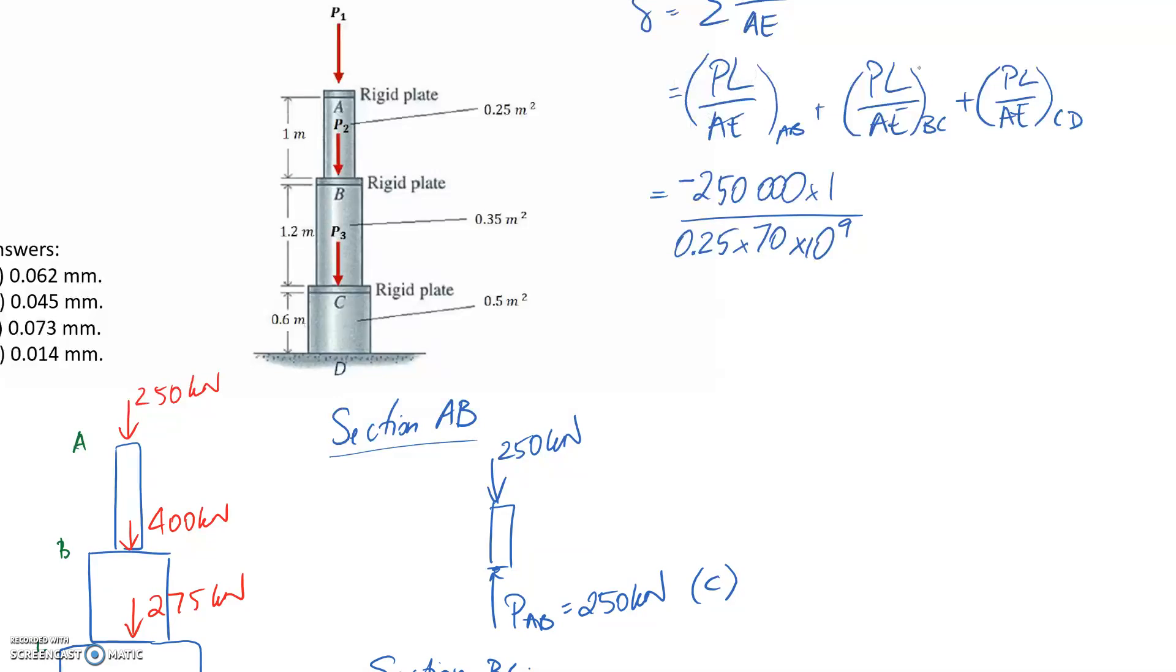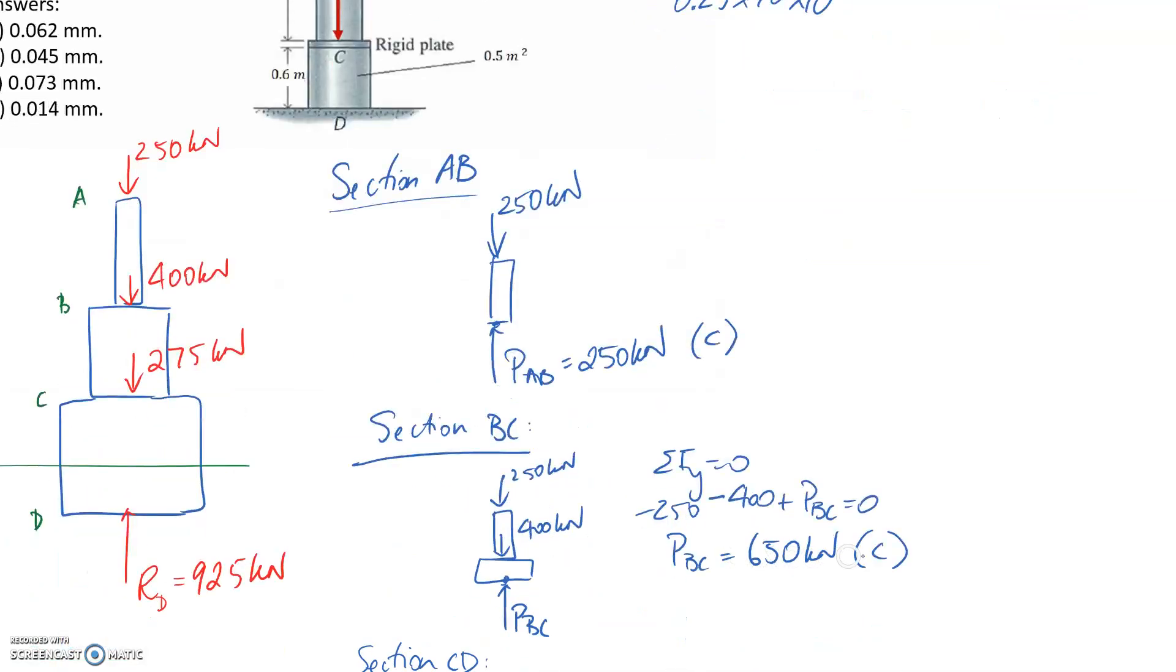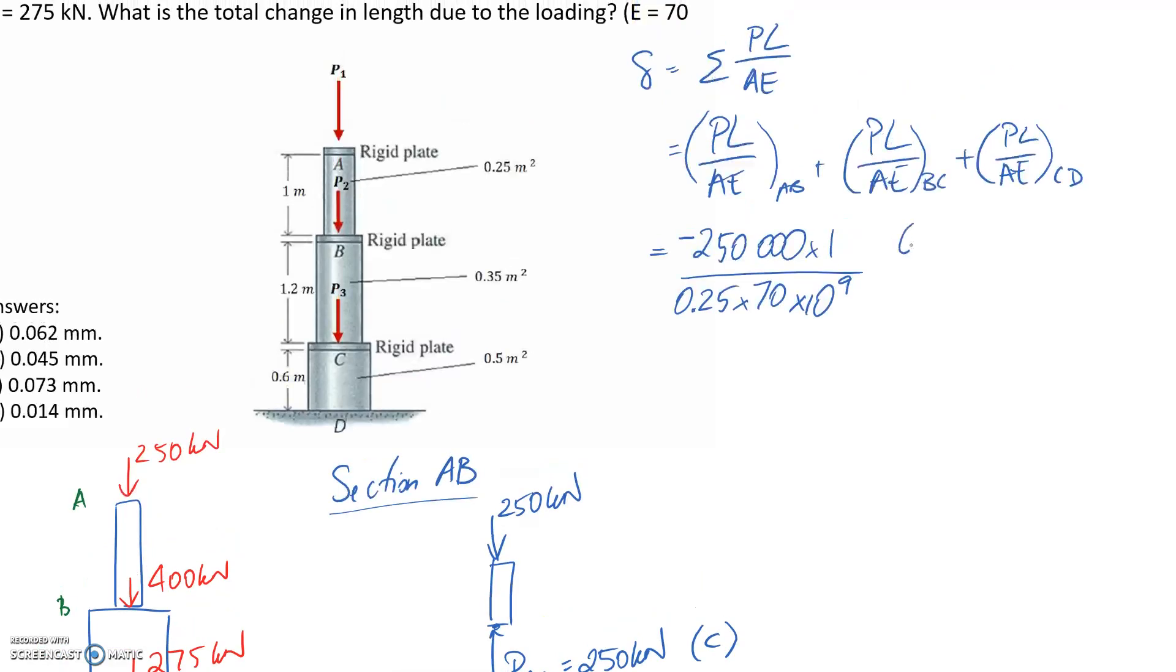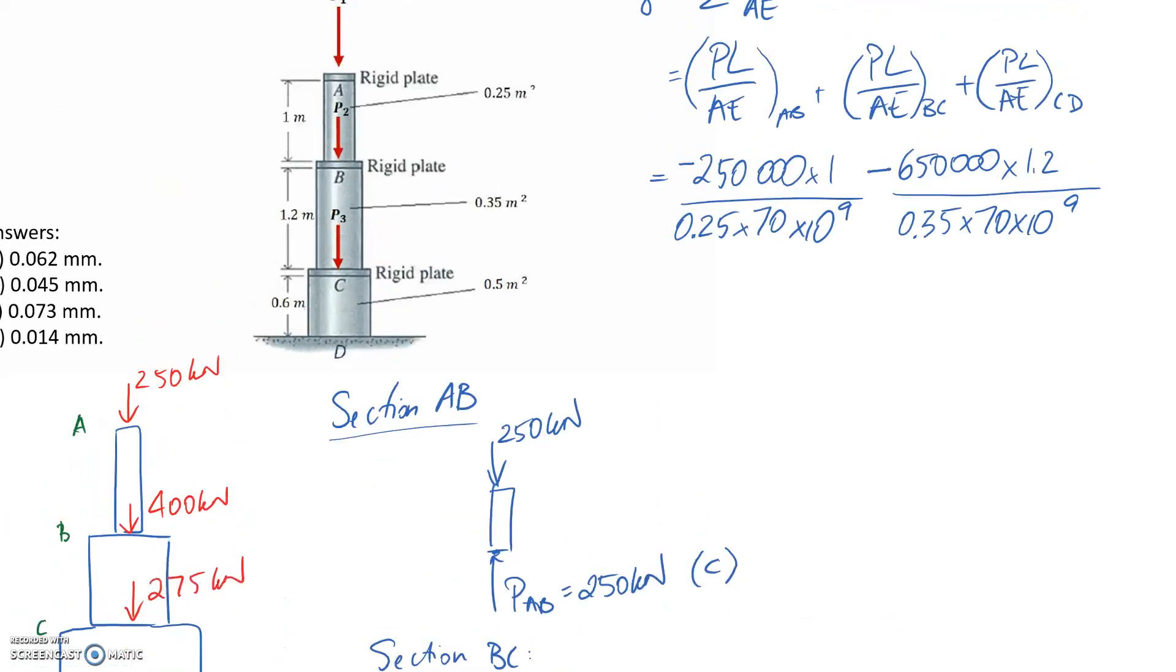That's the first one done, now section BC. The internal load through this section P was 650 kilonewtons. Substituting in, converting all units to base. The length of this section is 1.2 meters. The area of this part is 0.35. Young's modulus is 70 gigapascals. Whether it's tension or compression for positive and negative, we said compression so therefore negative.